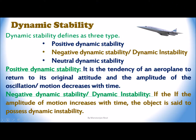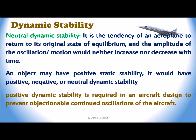Dynamic stability is defined in three types: positive dynamic stability, negative dynamic stability, and dynamic instability. Positive dynamic stability is the tendency of an aeroplane to return to its original attitude, where the amplitude of oscillation decreases with time. If the amplitude of motion increases with time, the object is said to possess dynamic instability. Neutral dynamic stability is the tendency of an aeroplane to return to its original state of equilibrium where the amplitude of oscillation neither increases nor decreases with time. Positive dynamic stability is required in aircraft design to prevent objectionable continued oscillations.